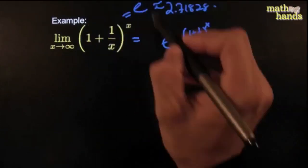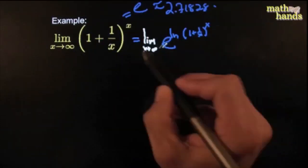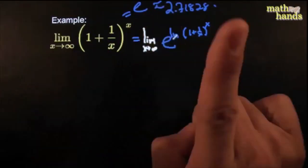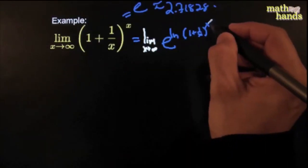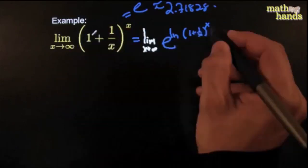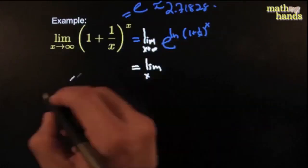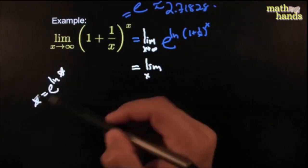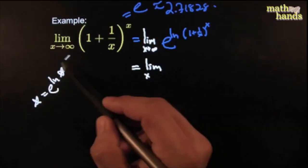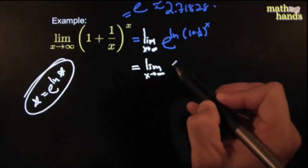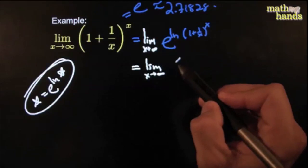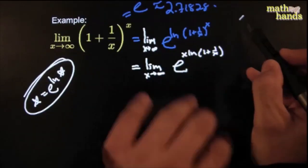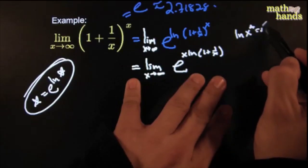Of course, if I put the limit on both sides, it's the same thing. This has the added advantage that you can bring the x down — using the famous property ln of x to the a equals a ln x — to get E to the x ln of 1 plus 1 over x. We can take the limit through the function, as long as that limit exists and the function is continuous there. That was on the continuous functions lesson. If this limit exists and E to the x is continuous there, this is an okay step.